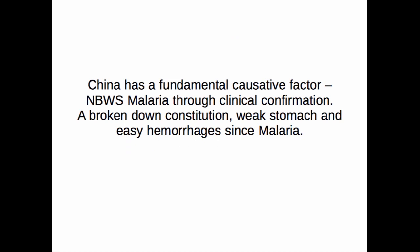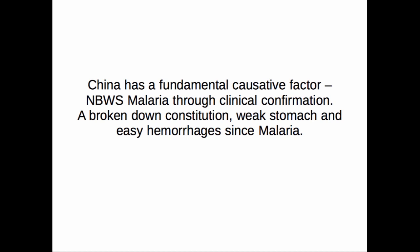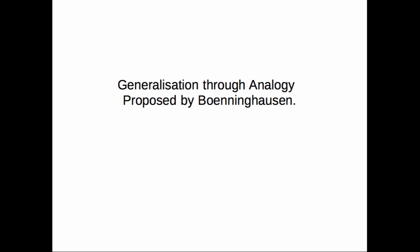Coming back to those remedies: China has a fundamental causative factor of 'not been well since malaria.' Through clinical confirmation we see a whole state of a broken-down constitution — a weak digestion, easy hemorrhages — everything started from malaria. So if you have a strong causative factor linking multiple pathologies and multiple diagnoses, that is Stage 3 information. Mercurius has created violent thoughts, impulsiveness, and hurriedness, and you can clinically confirm that the Mercurius personality is violent, impulsive, and hurried — you start imagining a person who is a Mercurius personality. That is also Stage 3 information.